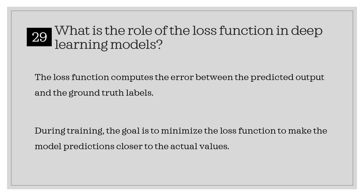What is the role of the loss function in deep learning models? The loss function computes the error between the predicted output and the ground truth labels. During training, the goal is to minimize the loss function to make the model predictions closer to the actual values.